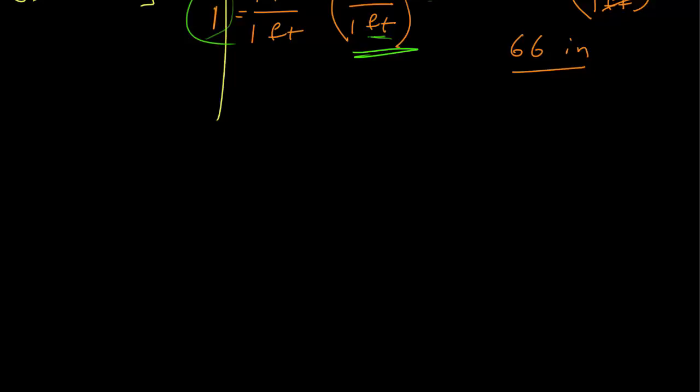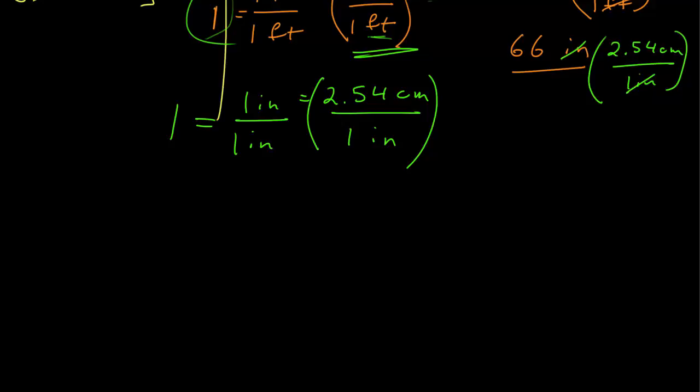All right, so now we have inches, and now we can convert. We know that 1 inch is equal to 2.54 centimeters. I want to get rid of inches, which is in the numerator, so if I divide both sides by 1 inch, this gives me the number 1 is equal to 2.54 centimeters over 1 inch, so I can multiply, and now the inches cancel, and 66 times 2.54 gives me 167.64.